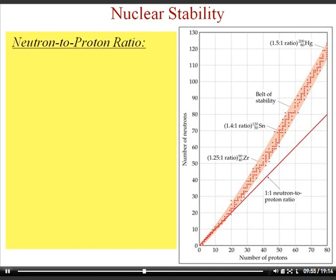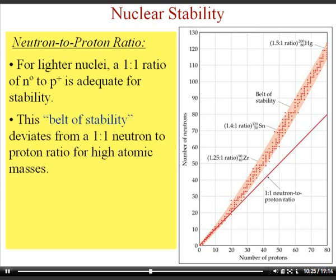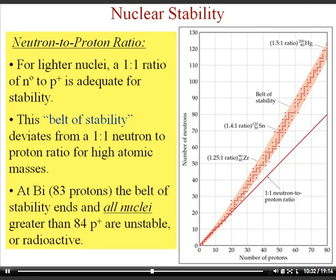The belt of stability describes the neutron-to-proton ratio of stable atoms. For lighter elements like carbon (6p, 6n) and oxygen (8p, 8n), the ratio is roughly 1:1. As elements get heavier, more neutrons are required, so the belt deviates from 1:1. At bismuth (element 83), the belt of stability ends — all nuclei with more than 83 protons (starting with polonium) are inherently unstable and radioactive.